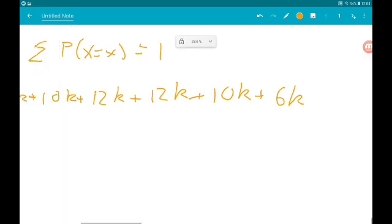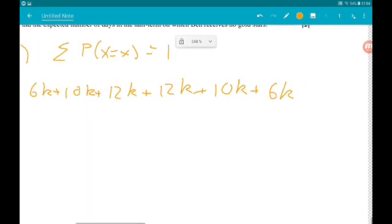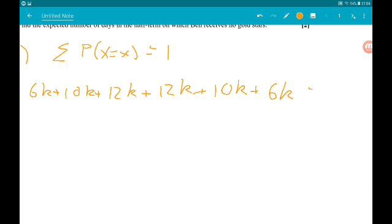So that is the sum of all of our probabilities. That has to equal 1. If we add together the left-hand side, we get 56k is equal to 1. Therefore, k is 1 over 56.